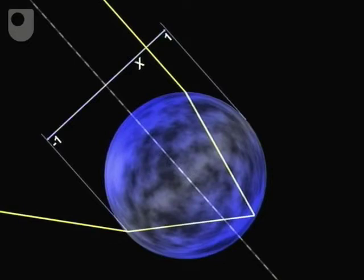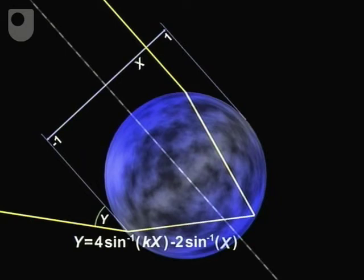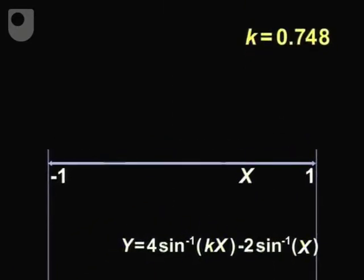Using trigonometry, Descartes related the impact parameter x to the exit angle y. That's the angle between the emerging ray and the incoming sun's rays. Descartes derived a function for the angle y. k is a constant. It's a measure of how much light bends as it passes from air into water. And Descartes used a value for k of 0.748. For each impact parameter x, you can plot the value of y to give this graph.